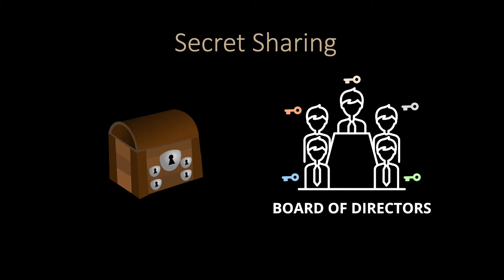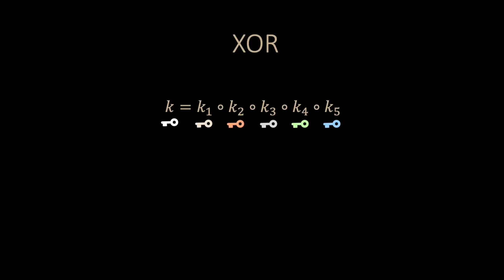How can we do this in a digital world? One way of doing it is by using XOR. Given a key, you can write it as XOR of five other keys, as shown in this equation. The circle notation here represents the XOR operation.